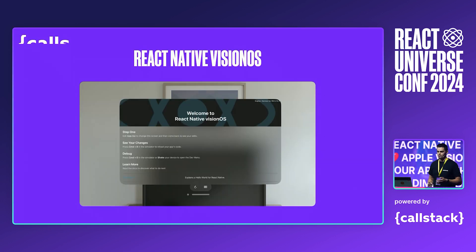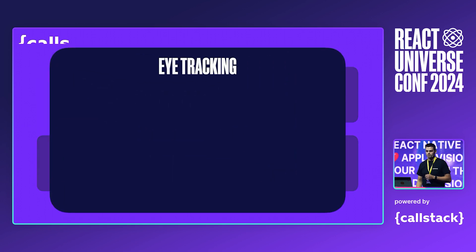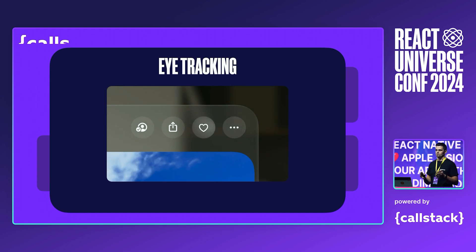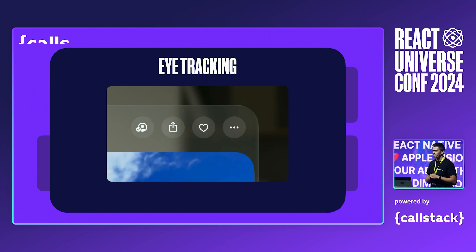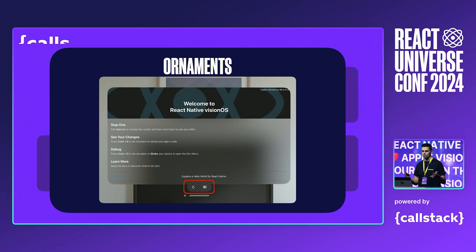Now let's focus a bit on React Native Vision OS, the project I've been working on for the past months. Here is a list of the platform-specific APIs we introduced to make it easier to leverage the full power of Vision OS. Starting off with eye tracking — Apple doesn't expose information about where the user is looking because this is a potential privacy threat, but we can opt into applying a hover effect whenever the user looks at an element. This feature has been introduced to React Native by the cursor pointer style.